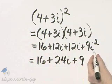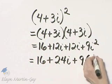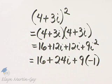Don't forget, i squared is negative 1. So instead of i squared, we write negative 1.